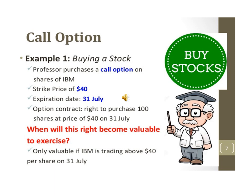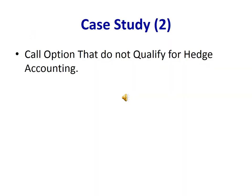We can use a call option to purchase shares with a strike price of $40, with an expiration date set to July. Our option will be valuable if the share is trading above $40 per share on the 31st of July. This is our second case study of call options that don't qualify for hedge accounting, so there is no hedging relationship, no hedging item or hedging instrument — only the call option as a contract.